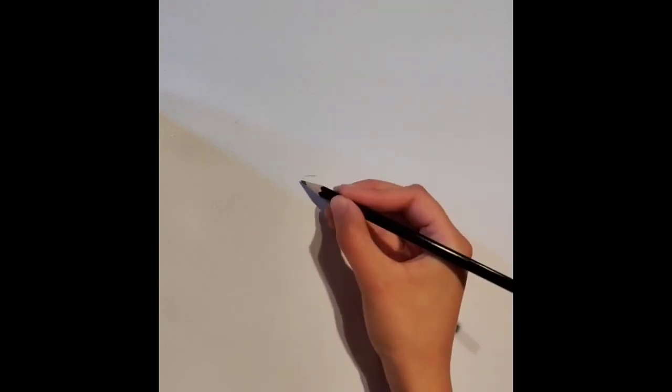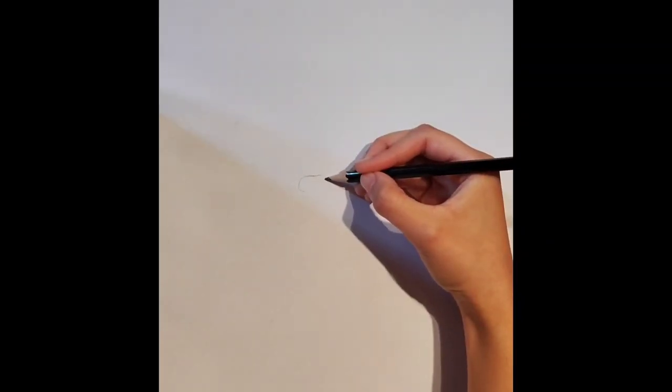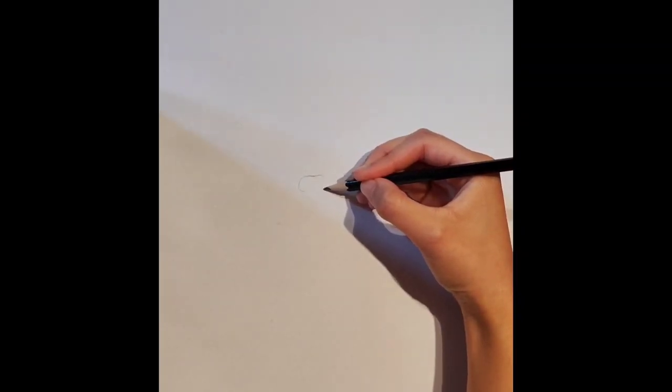First, we are going to start off with the dog's nose. Draw a curve like so. Then create two hooks underneath this curve, on both respective sides.